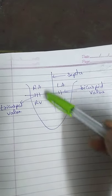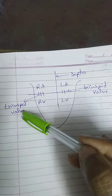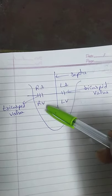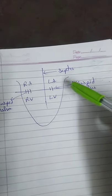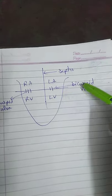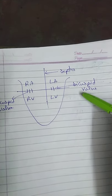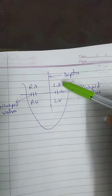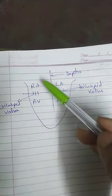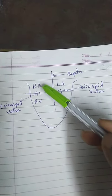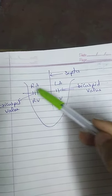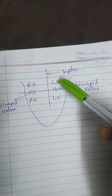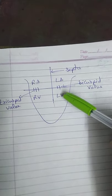Between the right atrium and right ventricle, there is a valve called the tricuspid valve, which allows only one-way flow of blood from the atrium towards the ventricle. Between the left atrium and left ventricle, there is a bicuspid valve, which allows flow of blood from the left atrium towards the ventricle only — backflow is not possible. The walls of the atria are thinner and the walls of the ventricles are thicker.